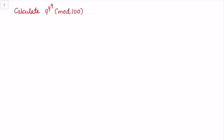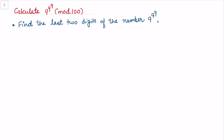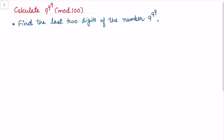In this video we want to calculate 9 to the power 9 to the power 9 modulo 100. We could also ask this as: find the last two digits of the number 9 to the power 9 to the power 9. Let's look at the solution and how we calculate 9^(9^9) using modular arithmetic concepts and properties of congruences.